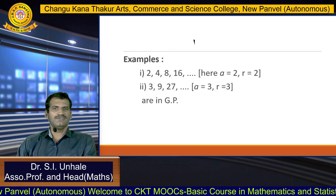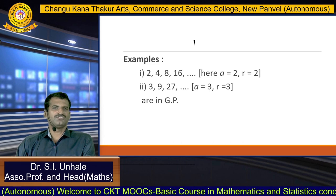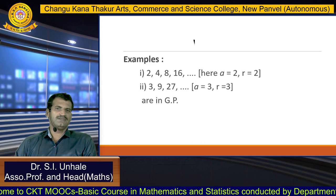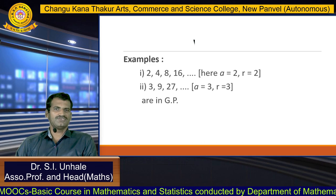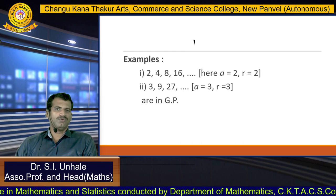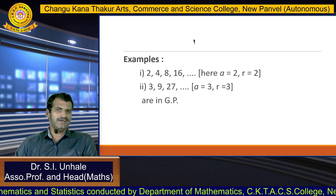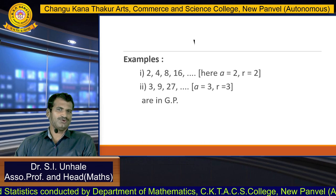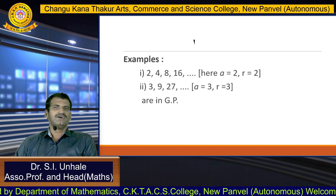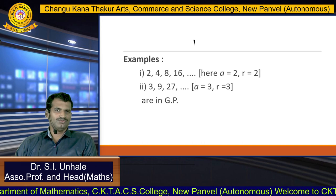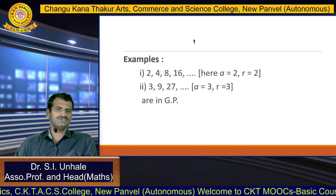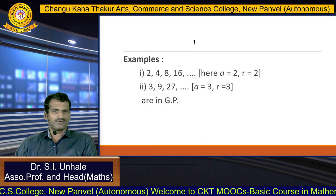Here are some examples of GP. First example: 2, 4, 8, 16. The first term is 2. The ratio of 4 to 2 is 2, and the ratio of 8 to 4 is also 2 — the ratio is constant. So this progression is called a geometric progression.